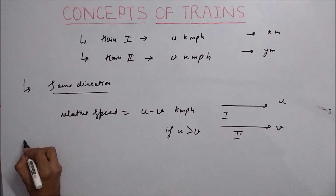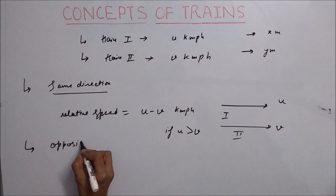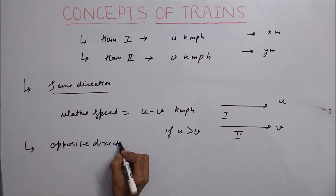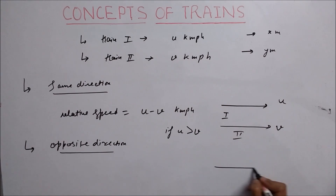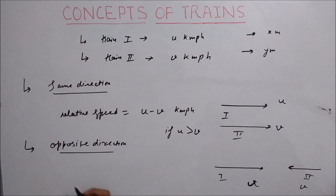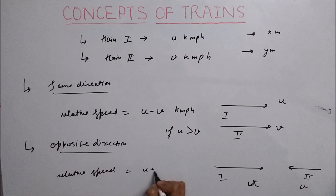In the second concept, if the trains are travelling in opposite directions — train one travelling in this direction and train two travelling in the opposite direction — then the relative speed is calculated by adding both the speeds. So relative speed is equal to u plus v km per hour.